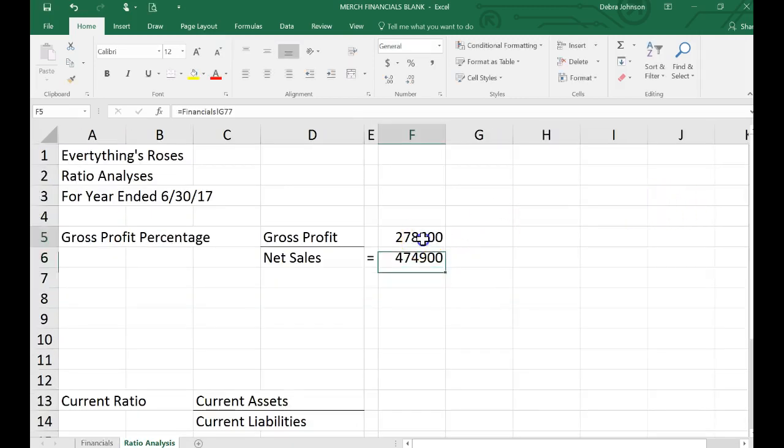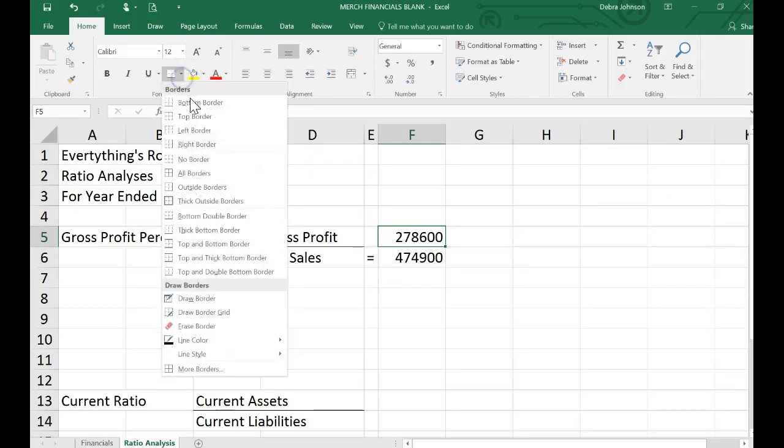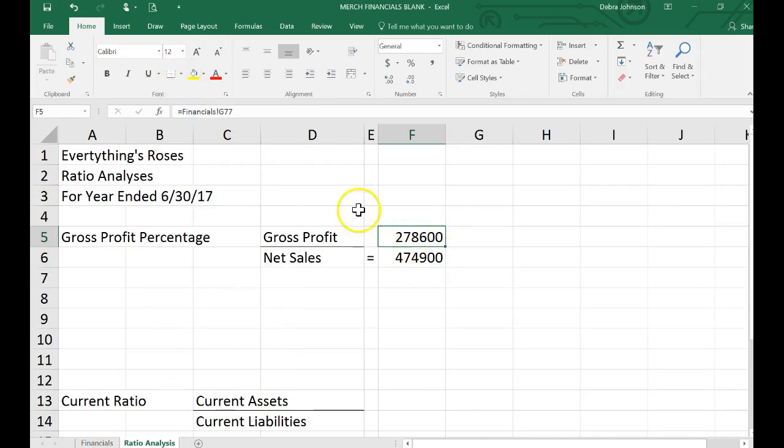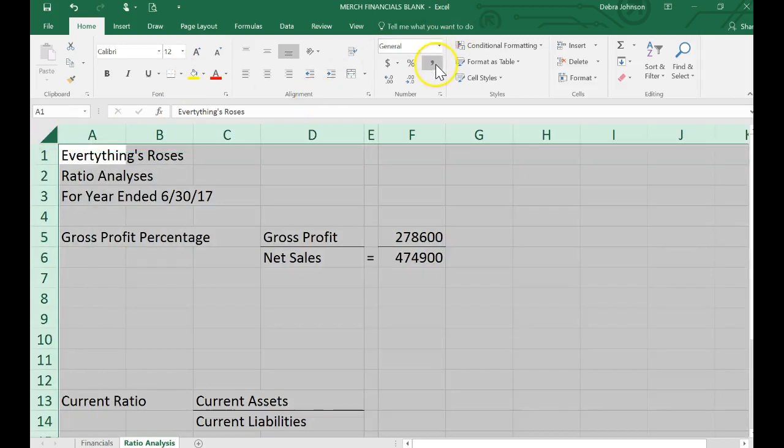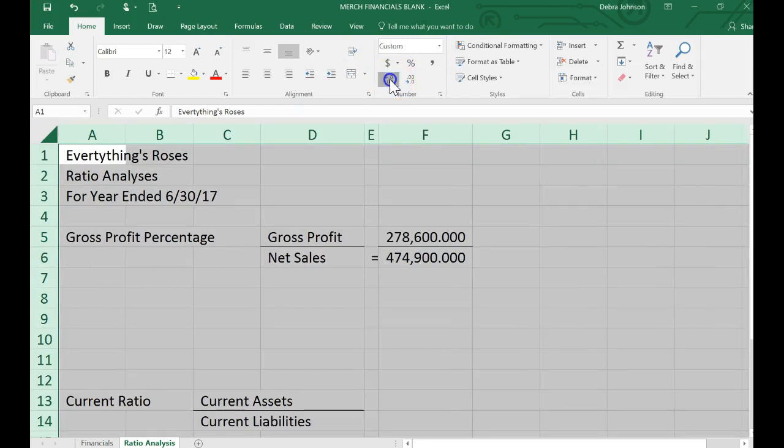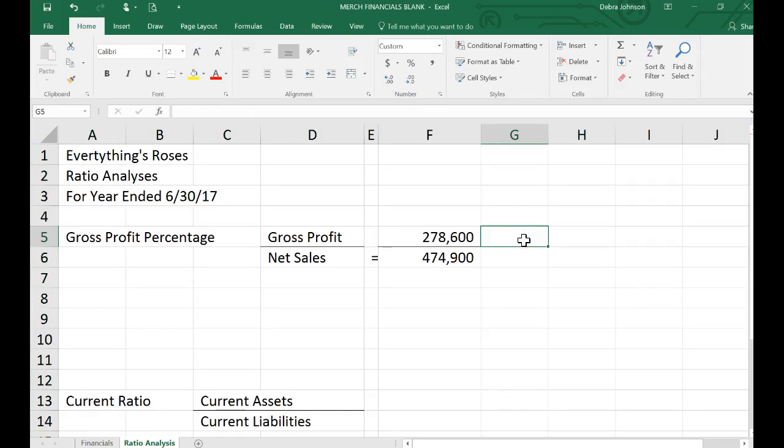And I'm going to clean this up by making the numbers user friendly. Which means I'll let you decide but I'm going to use probably the comma format with no decimals since I don't have any decimals. And then I'm going to show my answer in the appropriate manner. Which if it's a gross profit percentage then I expect to see the answer as a percentage. So let me calculate this as a percentage, maybe with a decimal place. And that would be my answer.